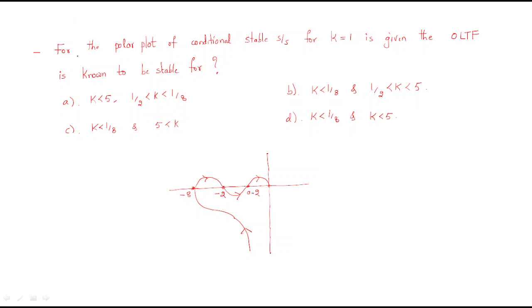In this session we will discuss the polar plot of a conditionally stable system for k equal to 1. For k equal to 1, it is given to be conditionally stable, and the open loop transfer function is known to be stable. Some k limits and the given polar plot are provided, and by using this polar plot we will find out the stability for different gains.